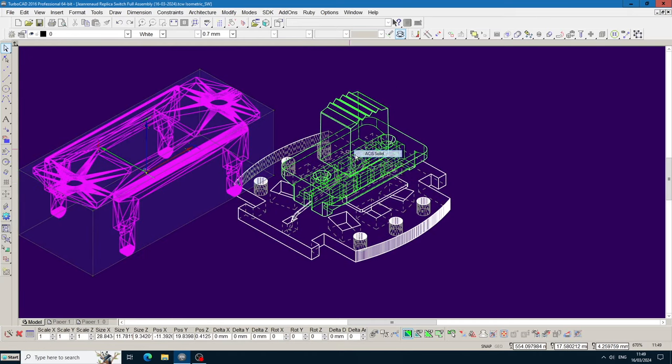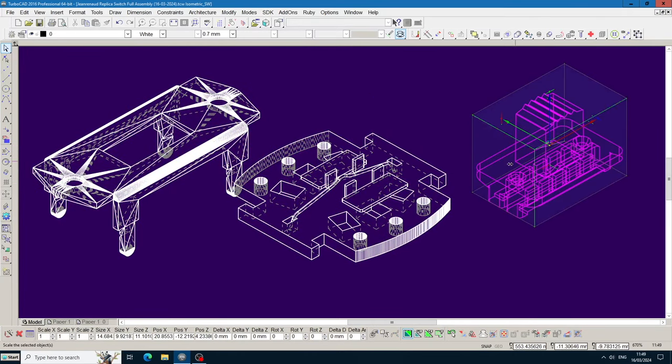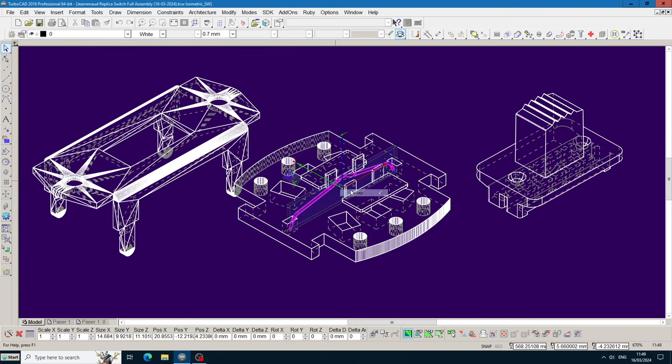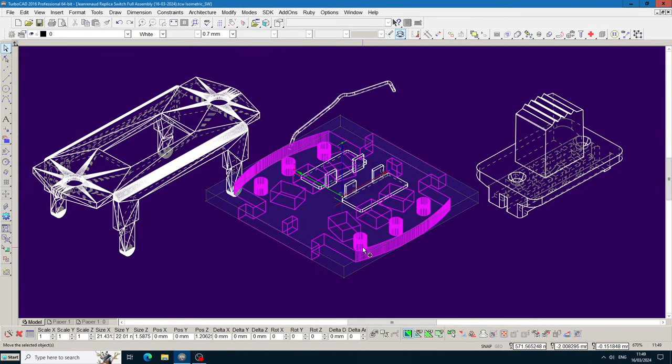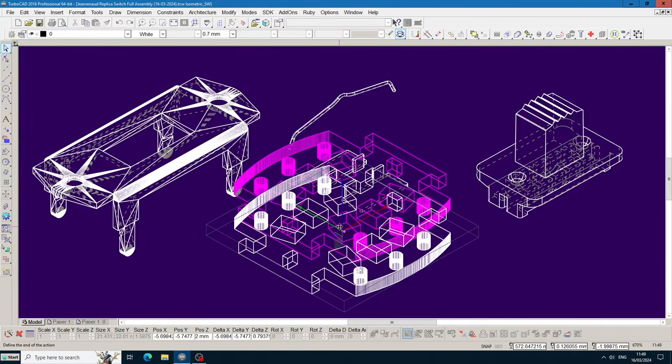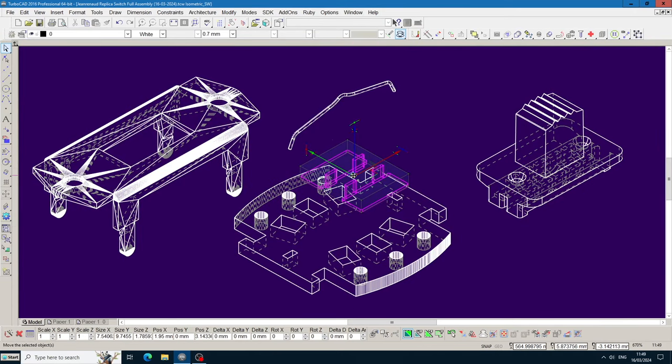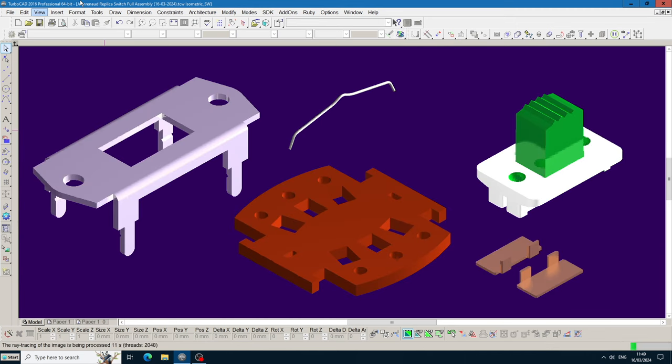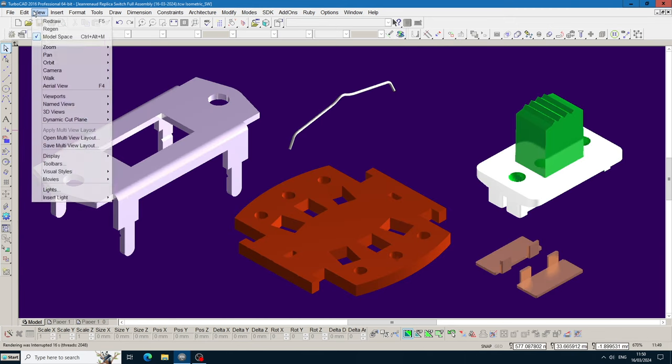It's worth noting at this stage that there are two distinct variants of this switch. I'm replicating the earlier variant which matches those in Brian's original Red Special. The later variant, which you saw fitted to my Red Special, has cutouts in the wafer and a slightly different plastic actuator design, but the principal dimensions are either identical or very similar.